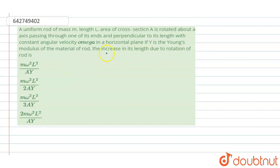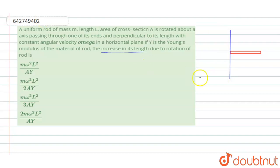So, we have to find out the increase in length. First of all, I will draw the rod. This is the rod of length L, and the axis of rotation is at one end. This is the axis of rotation, and the rod is rotating with angular velocity omega in a horizontal plane.